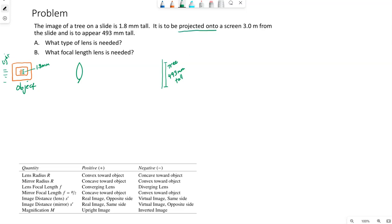Projected onto a screen means this absolutely must be a real image. I know this already. This is actually why I drew the screen on the right side. For my lenses, real images are on the opposite side of the lens compared to the object.